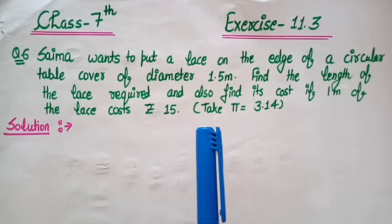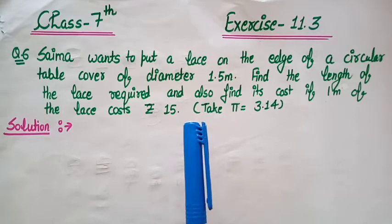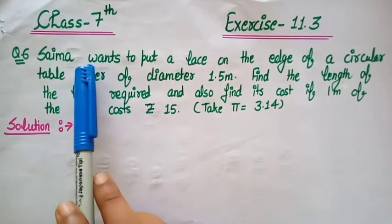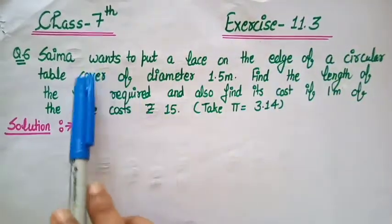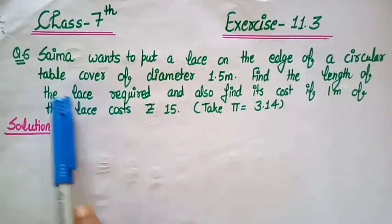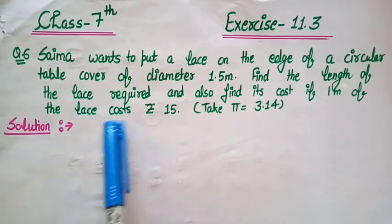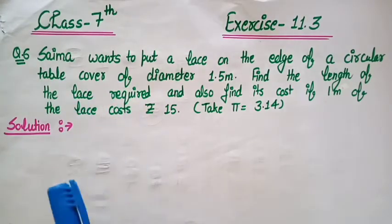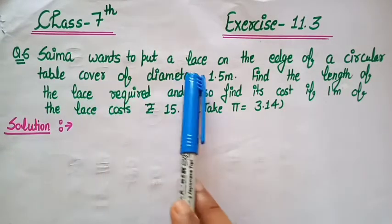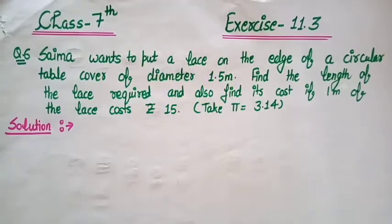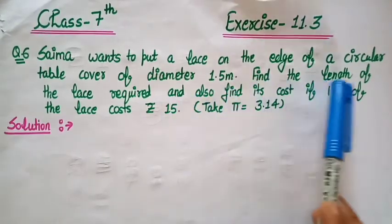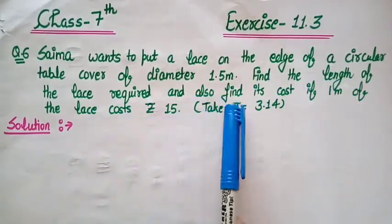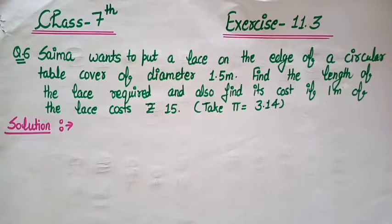Students, let's understand the question. Yahaan pe bola gaya hai ki Sema ek lace lagana chahati hai ek circular table cover pe — ek circle shape ka table ka cover hai. Uska diameter kitna hai? 1.5 meter diameter given hai. Aapne find out karni hai length of the lace required.